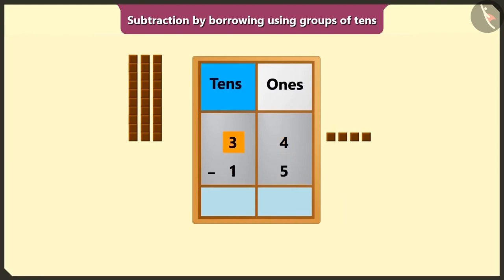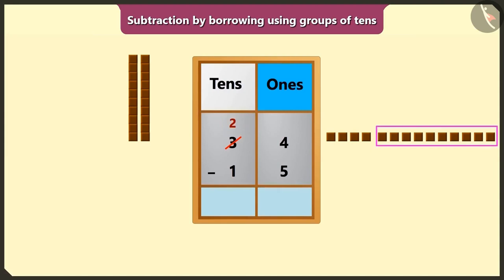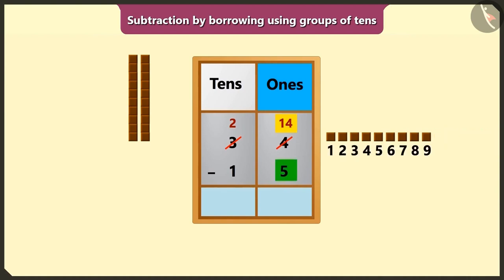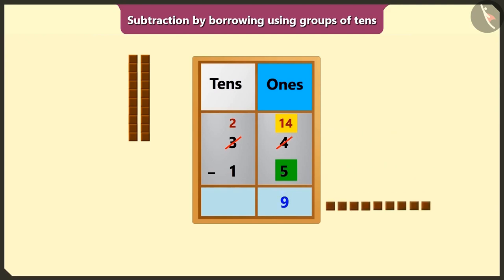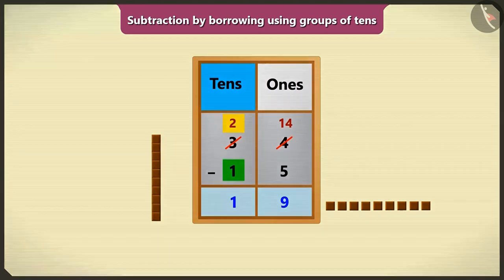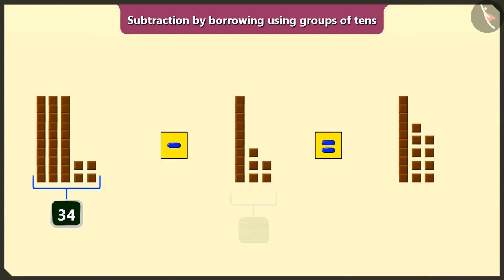15 means 1 ten and 5 ones. We cannot subtract 5 from 4 in the box of ones. So we will borrow 1 ten from 3 tens in the box of tens, leaving 2 tens. We will write 2 at the top of the box of tens. Now we will have 10 ones plus 4 ones equal to 14 ones in the box of ones. If we subtract 5 ones from 14 ones we would have 9 ones left. Then subtracting 1 ten from 2 tens leaves 1 ten — so the answer is 19 chocolates.